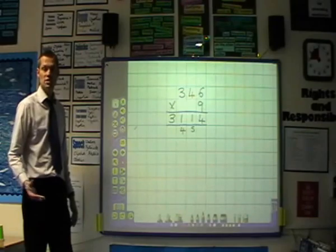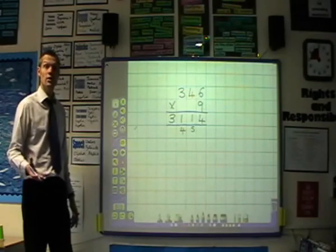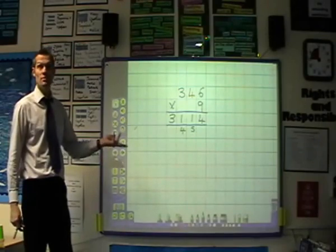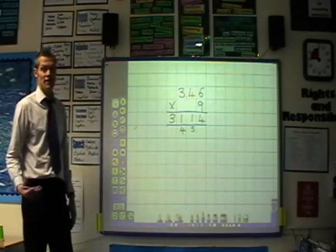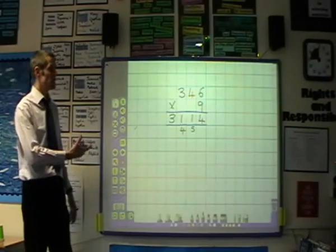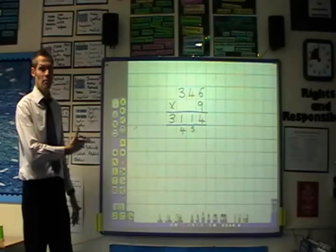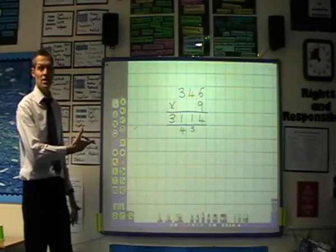Again though, it's very important by the time they leave primary school that they know when and when it isn't appropriate to use this method, because they may well be better, quicker methods of doing that, or in fact they may well be able to do this kind of thing in their head, in which case they would be partitioning the number and multiplying the bigger numbers first.